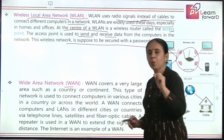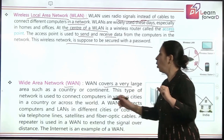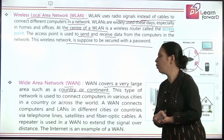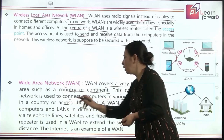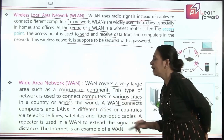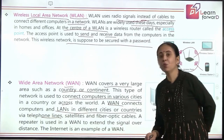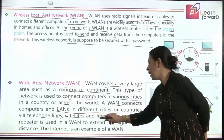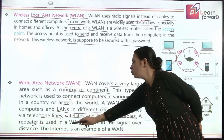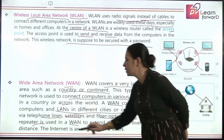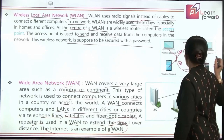Then we come to Wide Area Network (WAN). WAN covers very large areas — like a big city, a continent, or even an entire country. This type of network connects computers in various cities within a country or even across the world. WAN connects computers and LANs in different cities or countries using telephone wires, satellites, and fiber optic cables. Repeaters are used in WAN to extend the signal over long distances, and Ethernet is a good example of WAN.